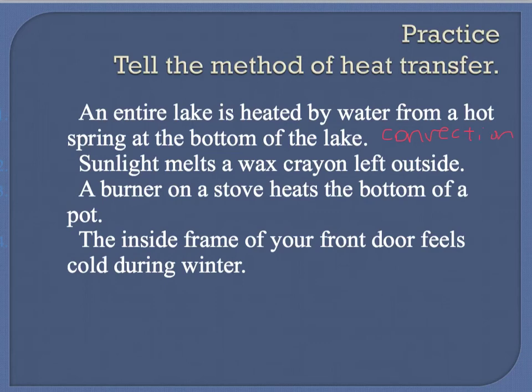The next example says sunlight melts a wax crown left outside. The key here is sunlight, and sunlight deals with radiation — write out the whole word. The next one is a burner on a stove heats the bottom of a pot. The pot is touching the burner on the stove — that implies direct contact, which means this is going to be conduction.